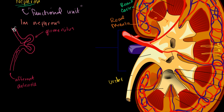This is the efferent arteriole. It's interesting that we're still dealing with an artery at this point — still oxygenated blood. Normally when we leave a capillary system like the glomerulus, we're dealing with the venous system. But here we're still in an arterial system, and that's probably because arterial systems have higher blood pressure.